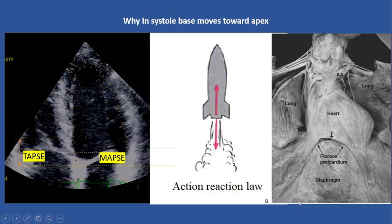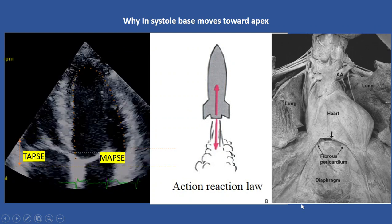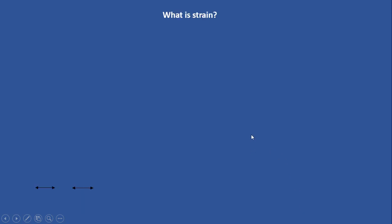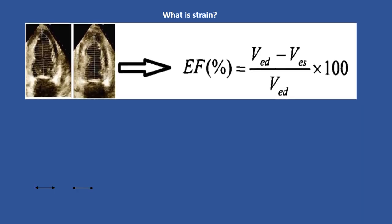Keeping this concept in mind, we use it in strain echo. Now, what is strain? Do you remember ejection fraction? Ejection fraction is the percentage or fraction of left ventricular volume changes during cardiac activity. In other words, it is the percentage of left ventricular volume change during systole: end-diastolic volume minus end-systolic volume, divided by end-diastolic volume, multiplied by 100. So ejection fraction is the percentage of left ventricular volume changes.